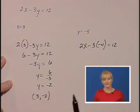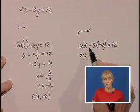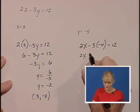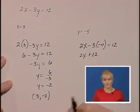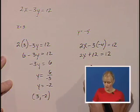Again we'll simplify this left hand side and at this time we're solving for x. We have 2x, and negative 3 times negative 4 is positive 12, so 2x plus 12 equals 12. We'll subtract 12 from both sides.